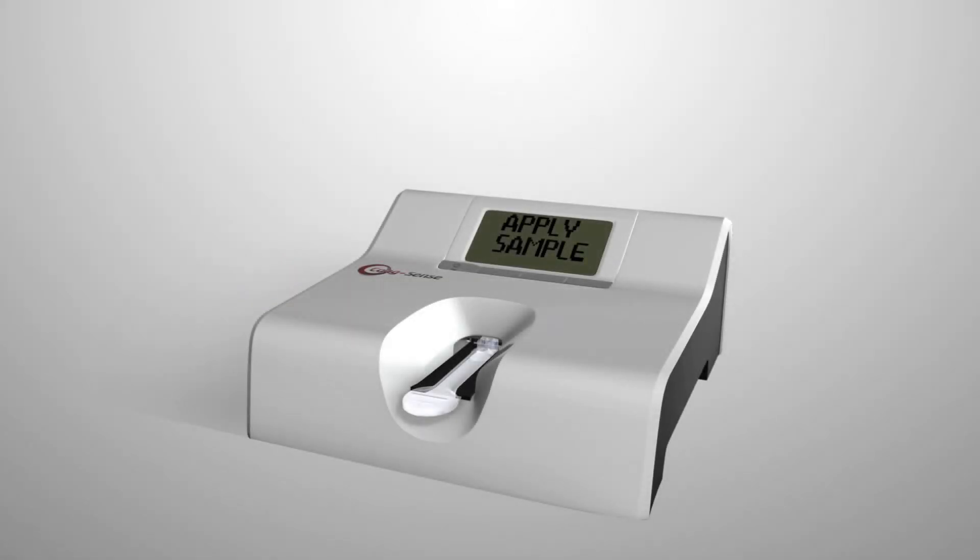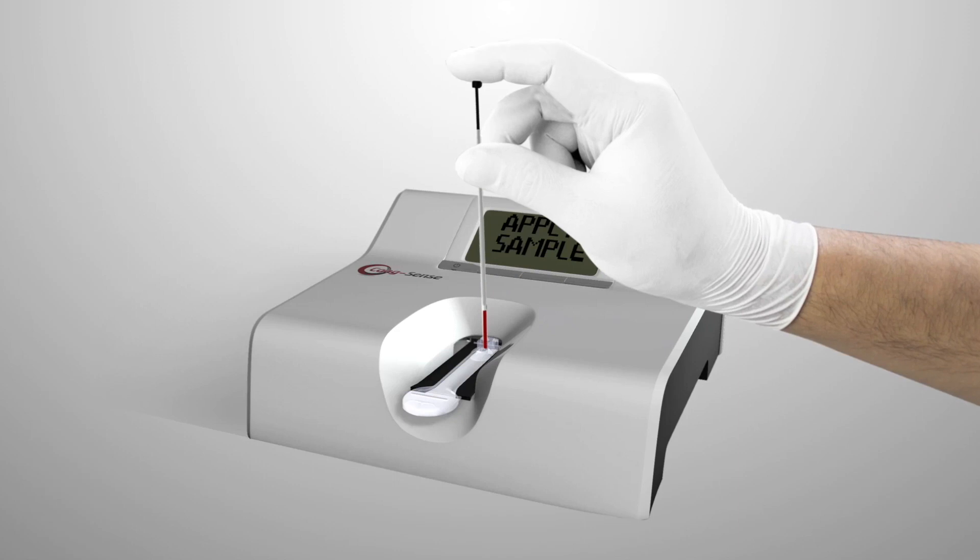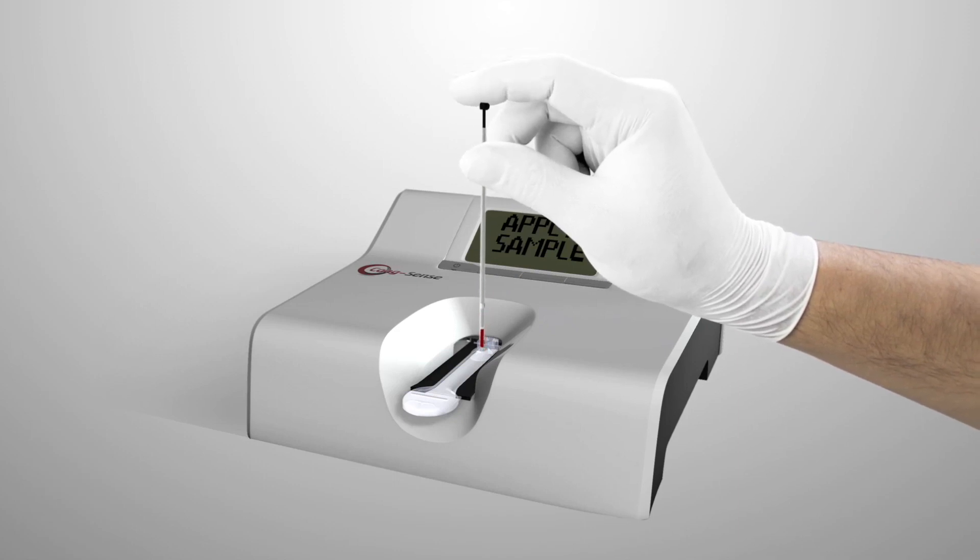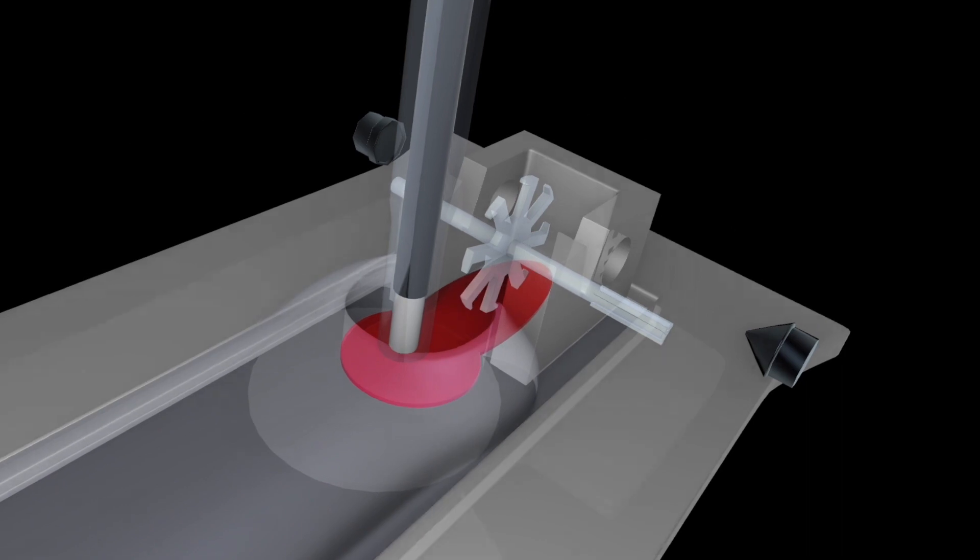Meter display must read apply sample before applying sample. Touch tip of tube down onto test strip sample application well. Gently depress plunger until blood exits tube.